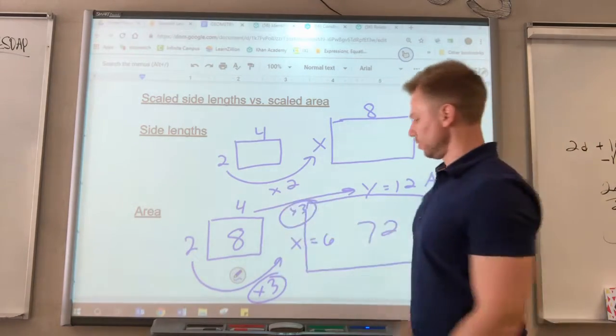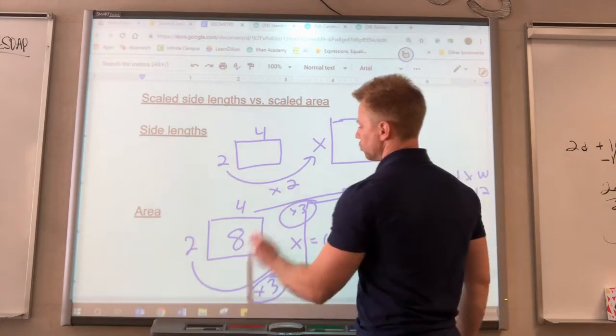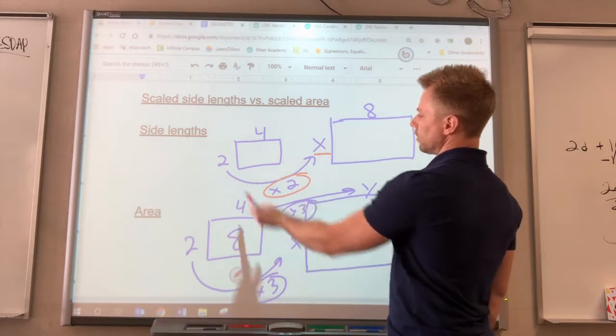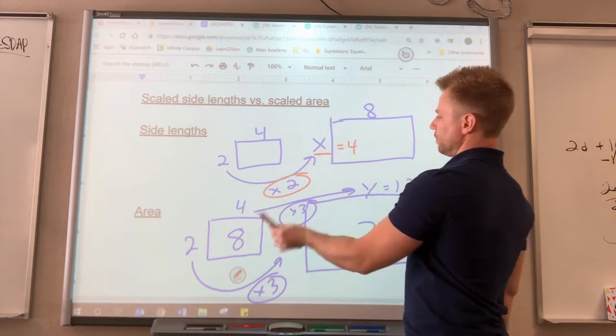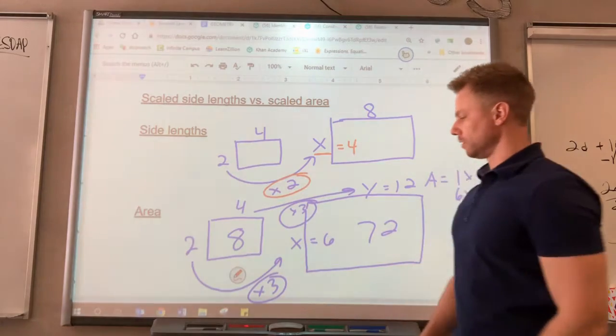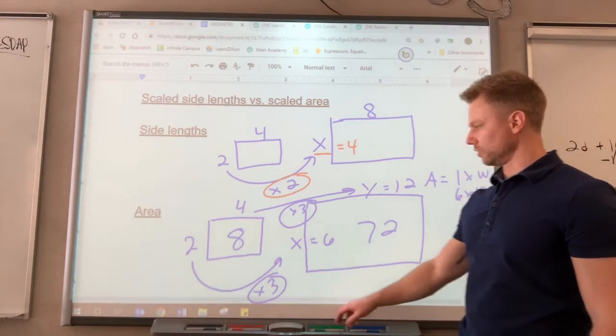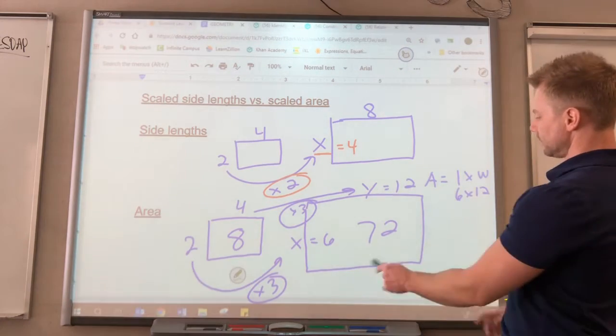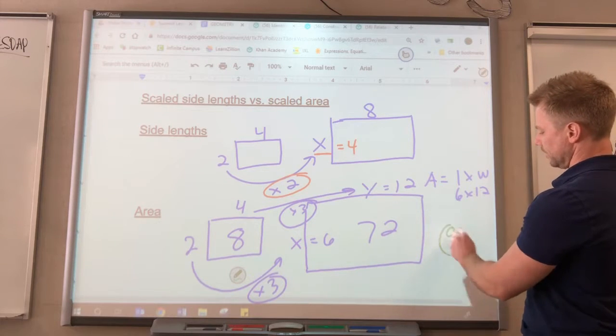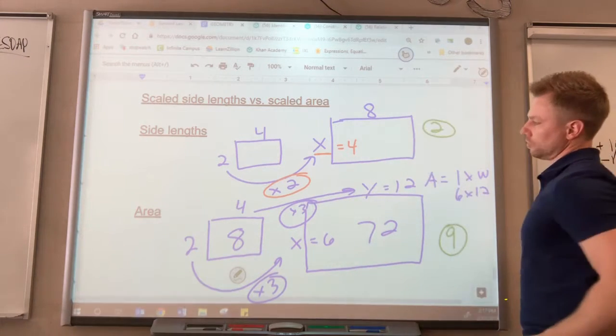Whereas here, we only multiplied by 2 once to figure out this side length, 2 times 2 is 4. That's all we did was multiply by 2 once. So the scale factor in this case would actually be 9, the scale factor up here is just 2.